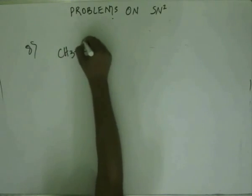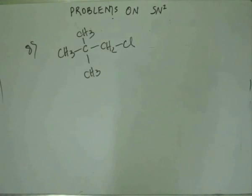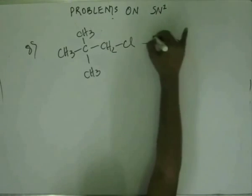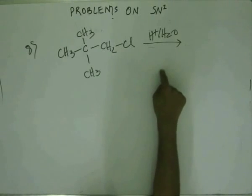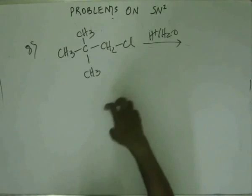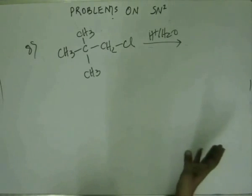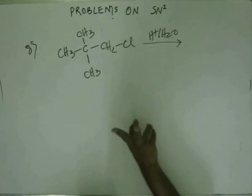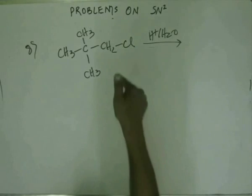Suppose I have been given an intermediate and they are asking us to draw the product, also providing the reagent: acidified water. Acidified water means water acts as both the solvent and the nucleophile; H+ is just acting as a catalyst. I haven't told you yet how to judge whether a reaction would be SN2 or SN1 — we'll see that later. For now, I'm giving you the information that the reaction will proceed via SN1 mechanism. There are two steps in SN1: first, the leaving group moves out forming a carbocation; second, the nucleophile attacks.